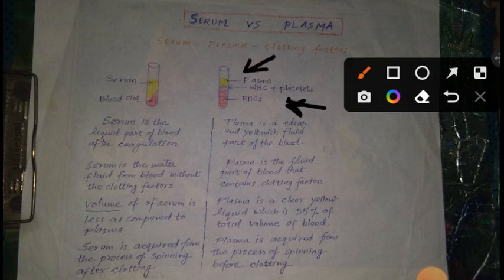Toh basic difference aap samaj gaye honge — plasma me clotting factors present hote hai, aur serum me clotting factors absent hote hai.